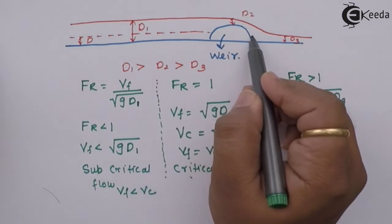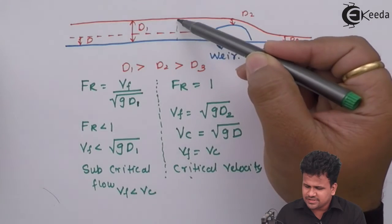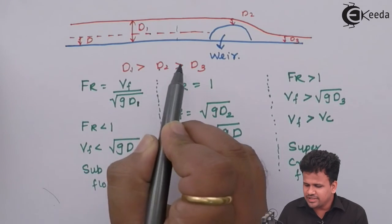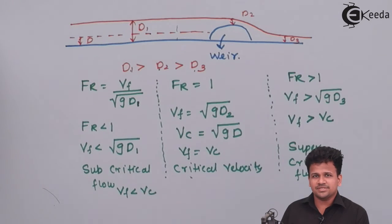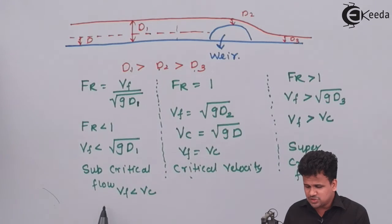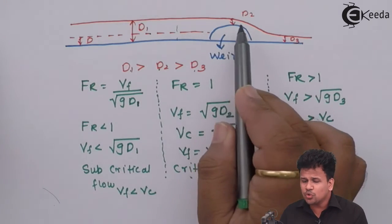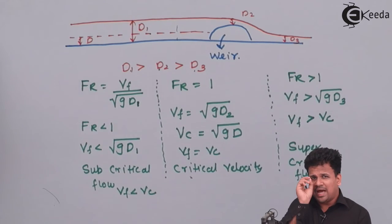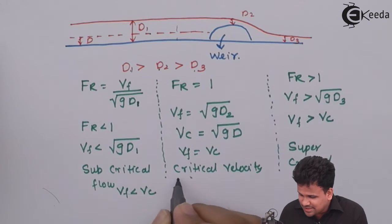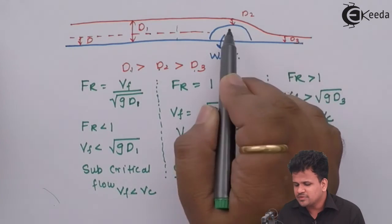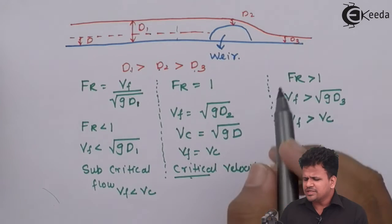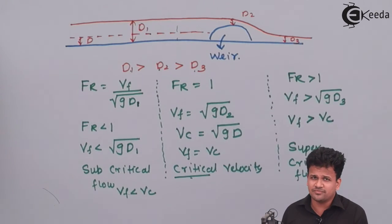When a weir is placed in the flow of a fluid, it first increases the depth to D1, then the depth becomes D2, and then D3, where D1 > D2 > D3. The velocity at depth D1 is lesser — that is why the flow is subcritical. As the fluid goes over the weir, its velocity increases. The velocity at which it transitions from subcritical to supercritical flow is called the critical velocity. Beyond the weir, as potential energy converts to kinetic energy — which we will learn in Bernoulli's principle — the velocity drastically increases, going from laminar to turbulent flow, which is called supercritical velocity.